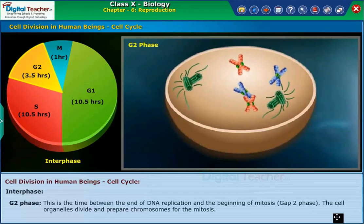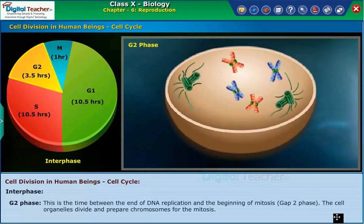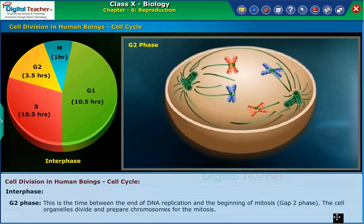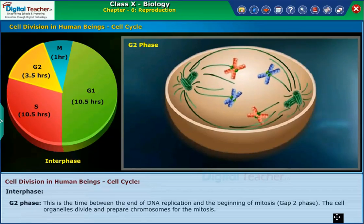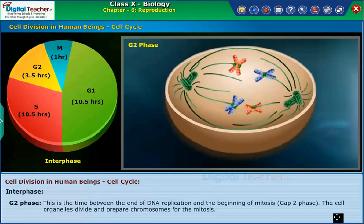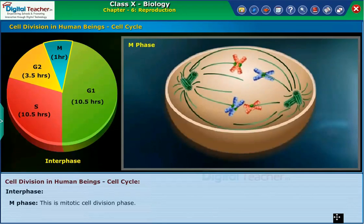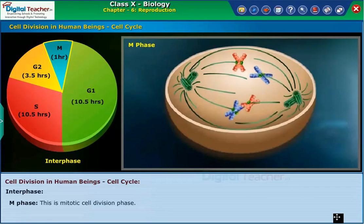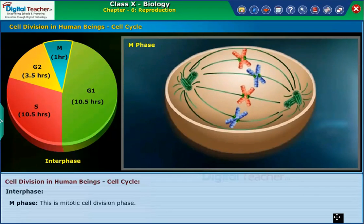G2 phase, or gap two phase: this is the time between the end of DNA replication and the beginning of mitosis. The cell organelles divide and the chromosomes are prepared for mitosis. M phase: this is the mitotic cell division phase.